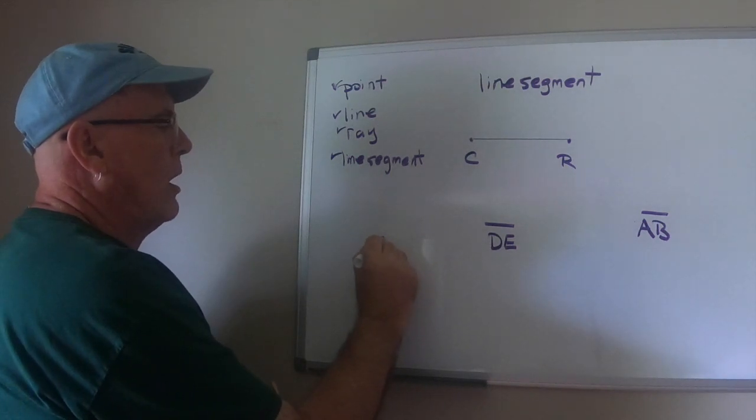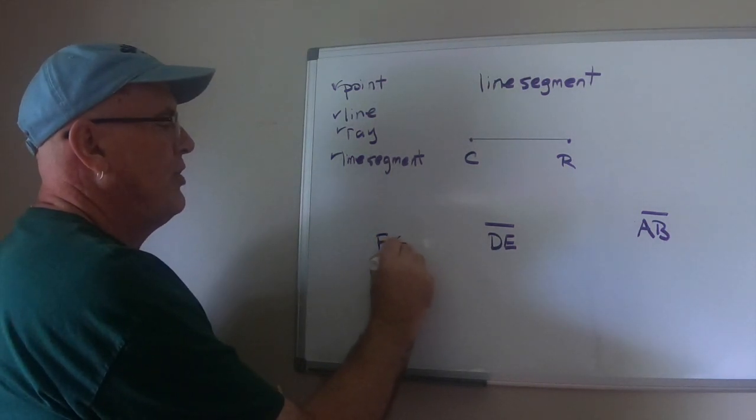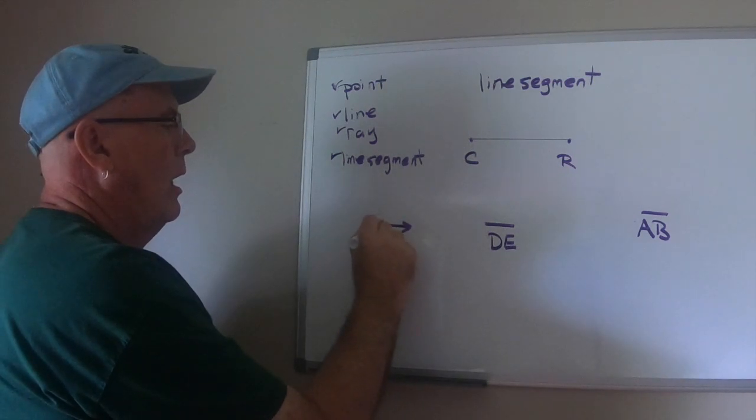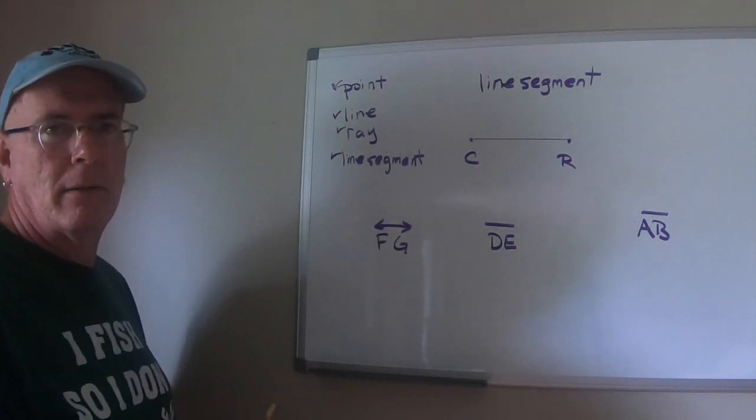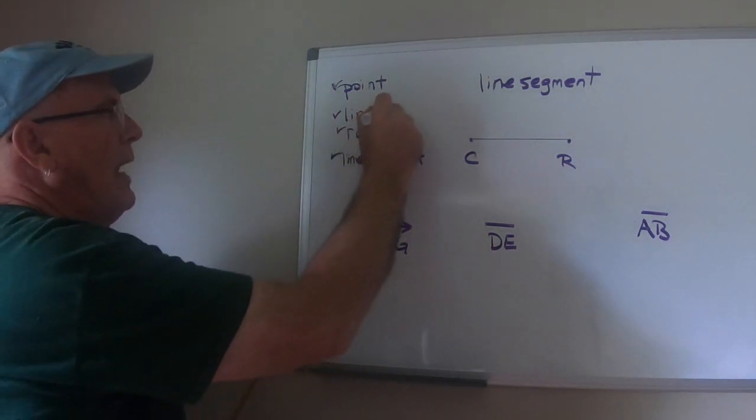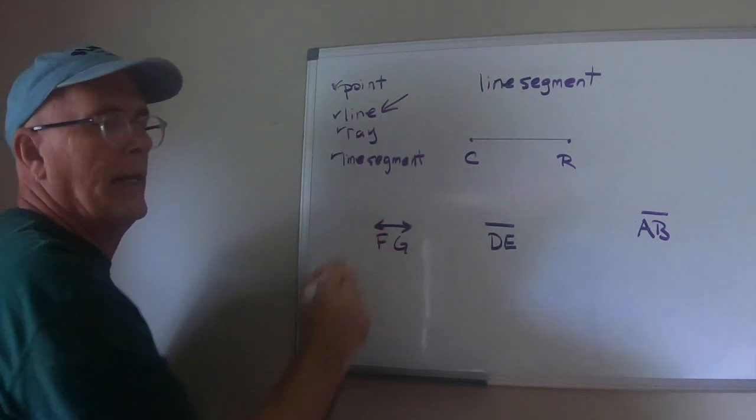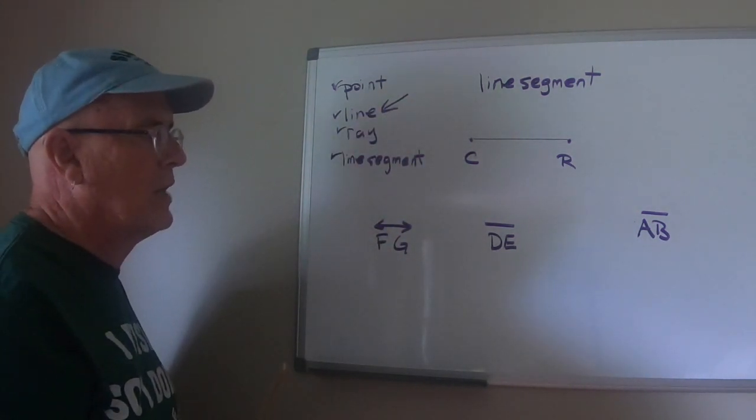All right? If you saw F, G with this over it, what would that be? Correct. That would be a line. Remember, a line has no beginning and no ending, so we use arrows on both sides.